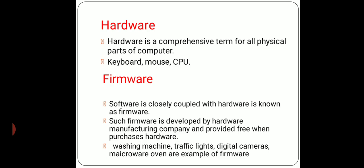Next topic is hardware. Hardware means hard entity — keyboard, mouse, CPU, and other peripheral devices that you can physically see and touch. In simple language, hardware is a comprehensive term for all physical parts of a computer. Keyboard, mouse, CPU are called hardware. Hardware means the physical parts that you can touch.